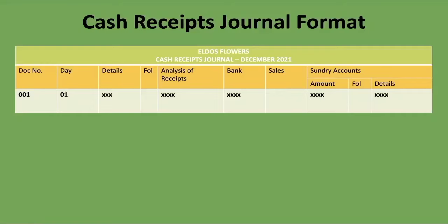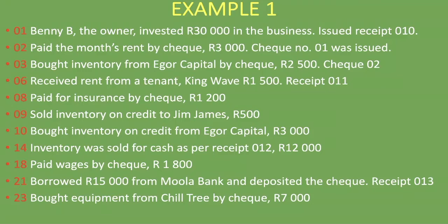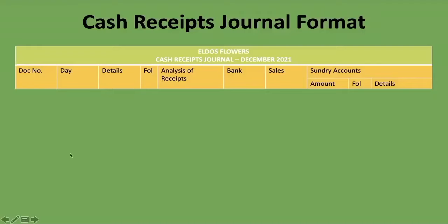Now let's go into an example and look at a number of transactions to complete the cash receipts journal. We are given transactions for a particular month — let's say January — on the first, second, third, sixth day, all the way until the 23rd. We have to complete the cash receipts journal. We've written the name of the entity, Elders Flowers, then 'Cash Receipts Journal,' and the month: December 2021.